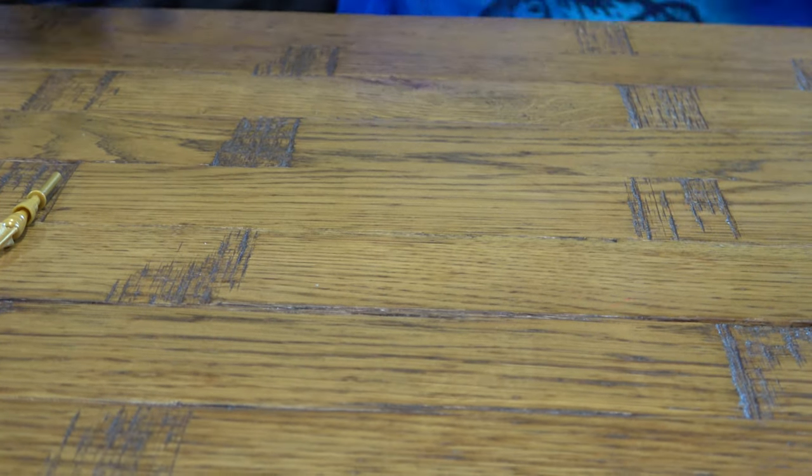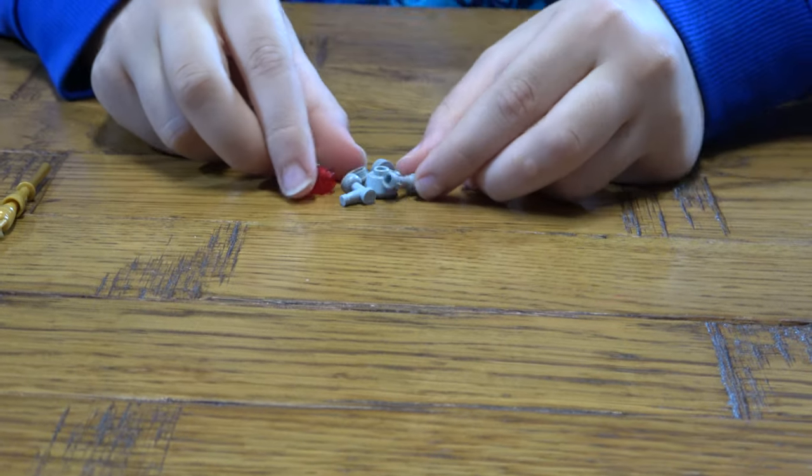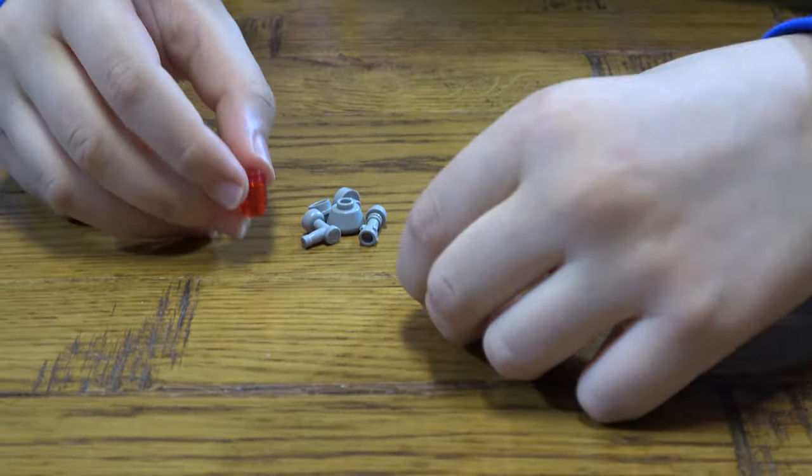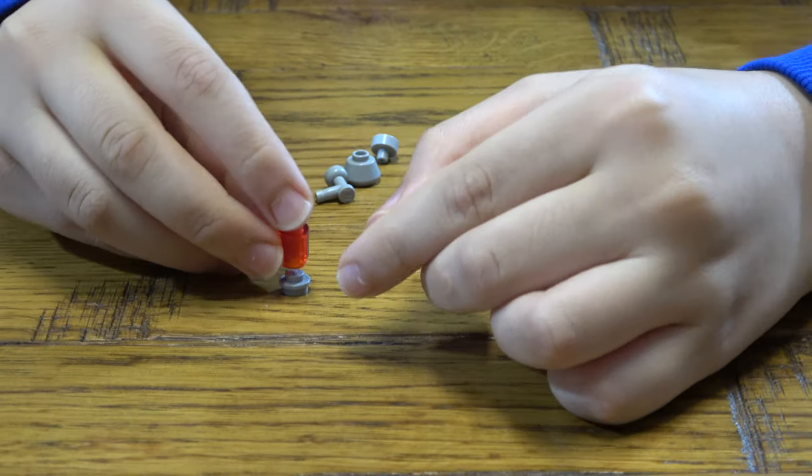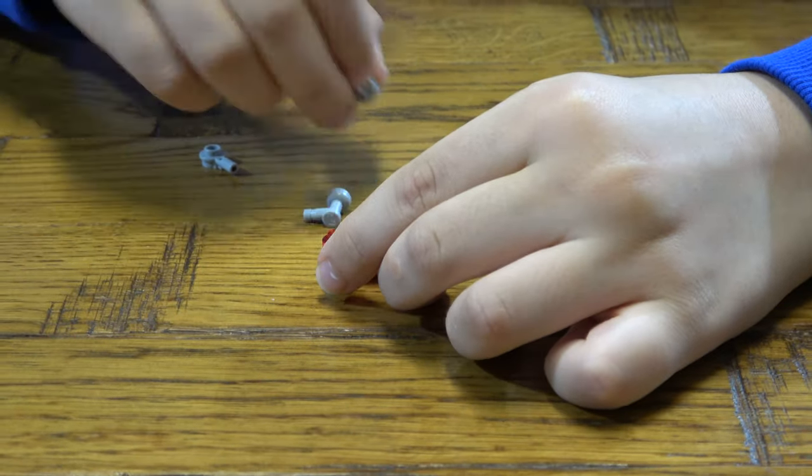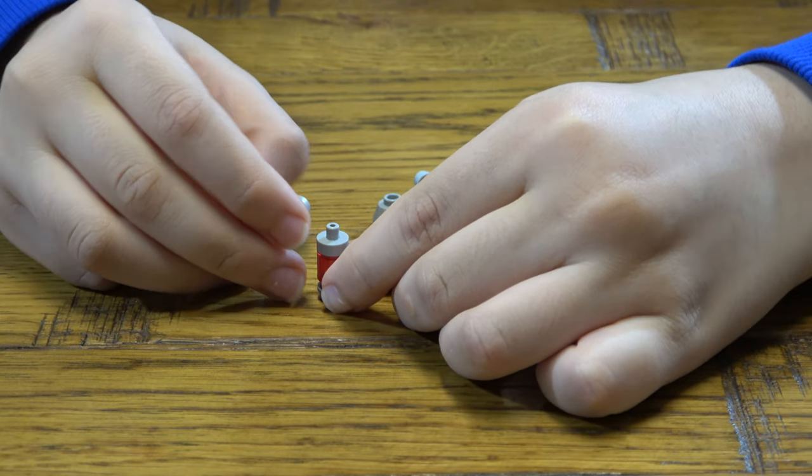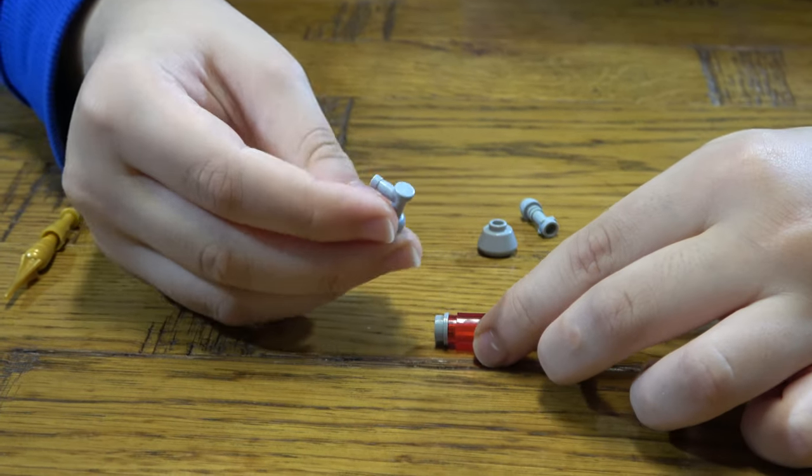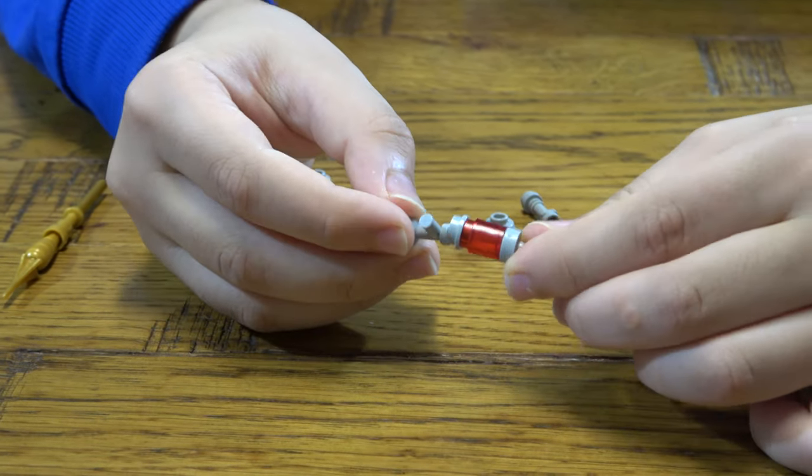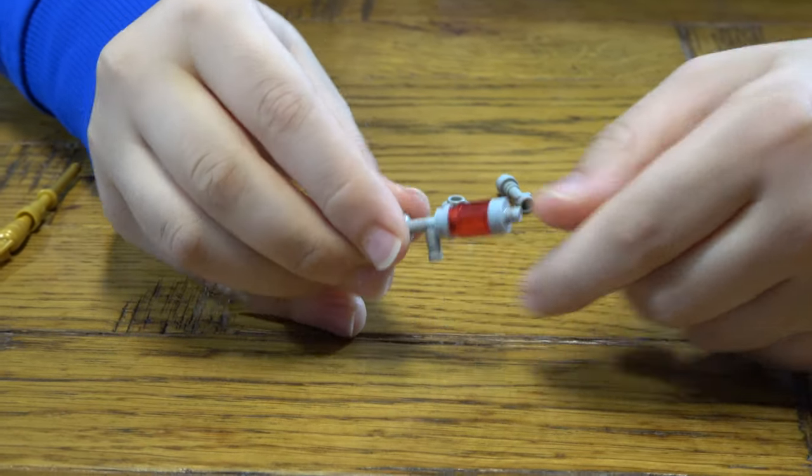Now we are going to go to the laser blaster. First, we get this, then we place that there. Then we place that on top. Next, you get one of these tap pieces and place this like so.